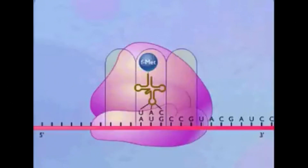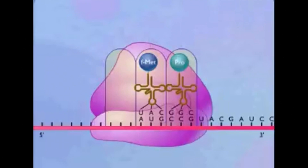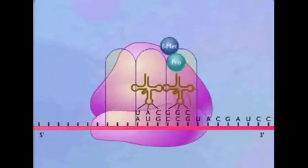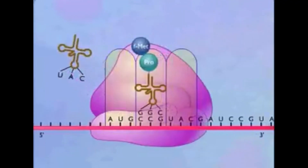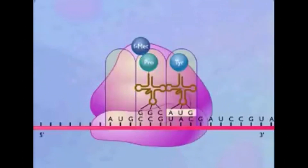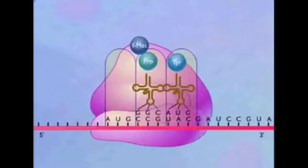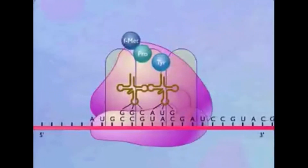tRNA stands for transfer RNA. These are the molecules that bring different amino acids to the mRNA being read by the rRNA. tRNAs decode the message on the mRNA — they carry three RNA nucleotides on one end, called an anticodon, and on the other end is the corresponding amino acid. If the anticodon is complementary to the three nucleotides on the mRNA — called a codon — then the ribosome links that amino acid to the protein chain being made. If it does not match, that tRNA goes away and another joins. This repeats until a match is made or a stop codon is reached.